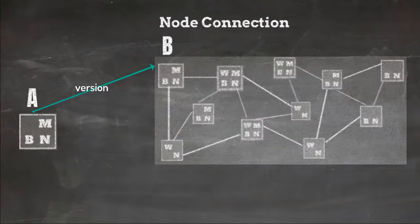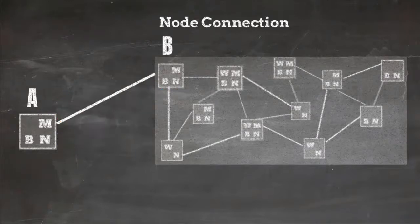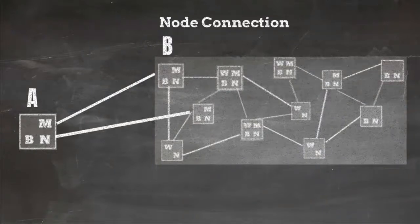In return node B will send version acknowledgement message. After that B will send version message and in return node A will send version acknowledgement message. After this node A can send get address request to the network nodes to get the list of IP addresses of other peers.